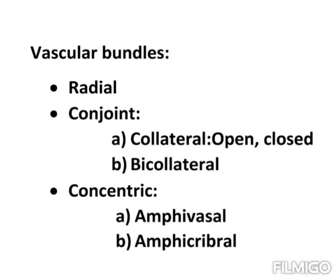The second type of conjoined vascular bundle is bicollateral. In this type, phloem is present on both the outer and inner sides of the xylem. So xylem is present at the center, with outer phloem on one side and inner phloem on the other side.